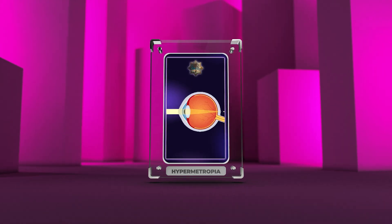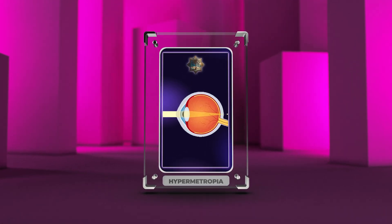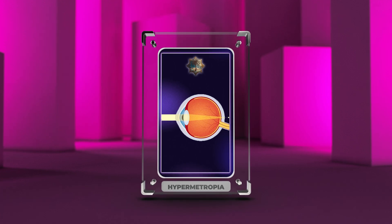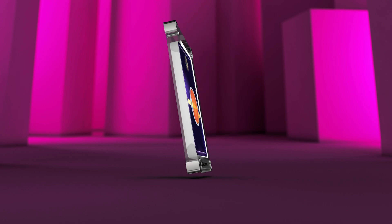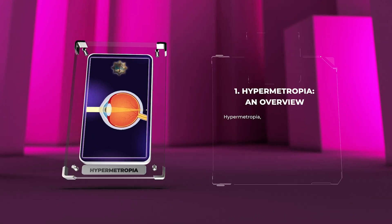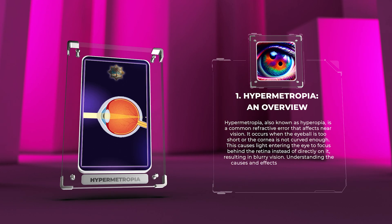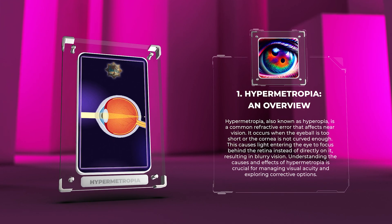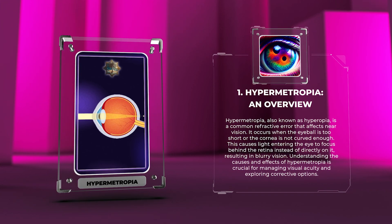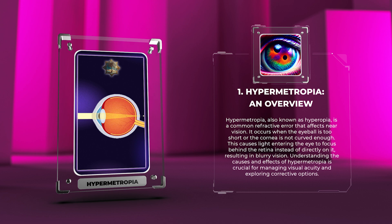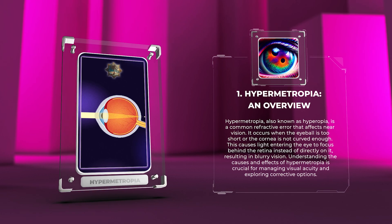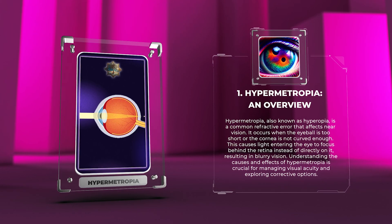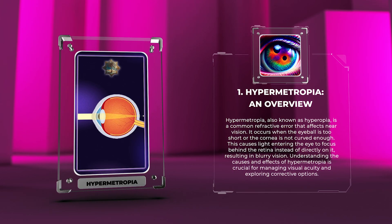By exploring these aspects, we'll gain a better understanding of this refractive error, helping us diagnose and manage it effectively in our future medical practice. Hypermetropia, also known as hyperopia, is a common refractive error that affects near vision. It occurs when the eyeball is too short or the cornea is not curved enough, causing light entering the eye to focus behind the retina instead of directly on it, resulting in blurry vision.